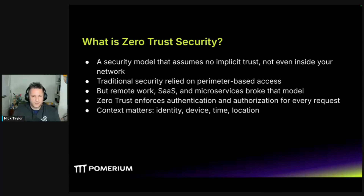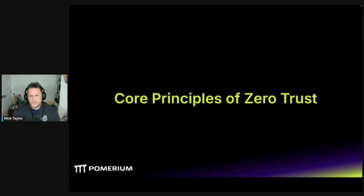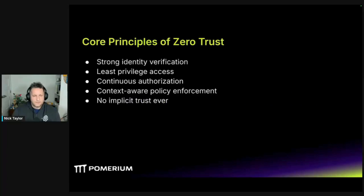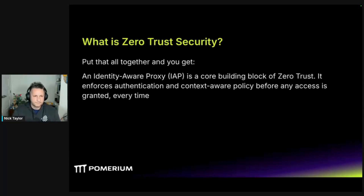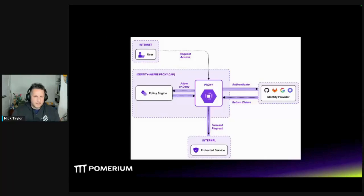Let's talk about the core principles of zero trust. There's strong identity verification, least privilege is always on the table, continuous authorization and verification, and context-aware policy enforcement. There is never any implicit trust — you always have to check. Put all that together and you get something called an identity-aware proxy, which is a core building block of zero trust — it enforces all the things I just mentioned.